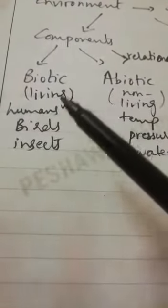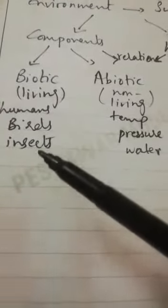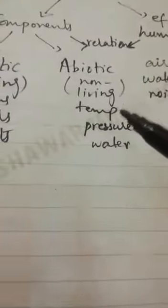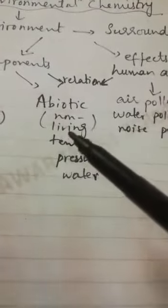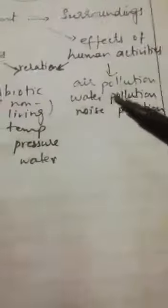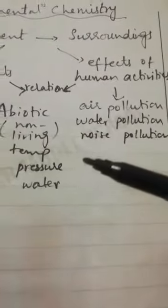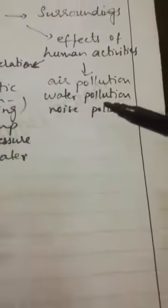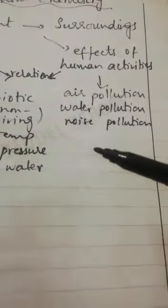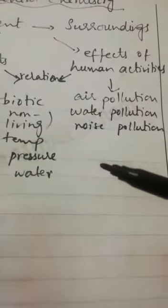The components are biotic — representing living factors such as humans, birds, and insects — and abiotic, which are non-living factors such as temperature, pressure, water, and soil. The biotic and abiotic components have a relationship with human activities. Human activities cause different types of effects which directly and indirectly affect the environment.